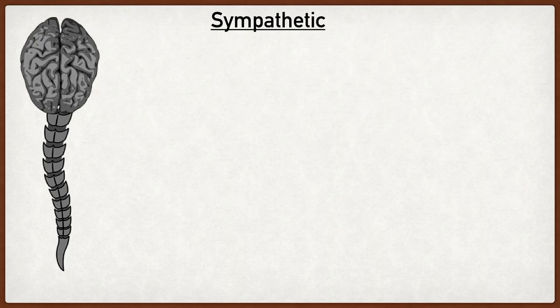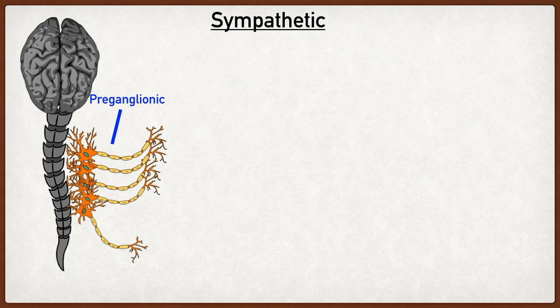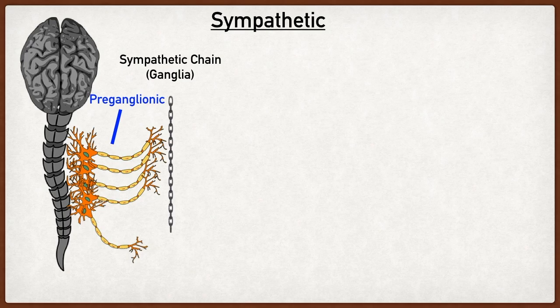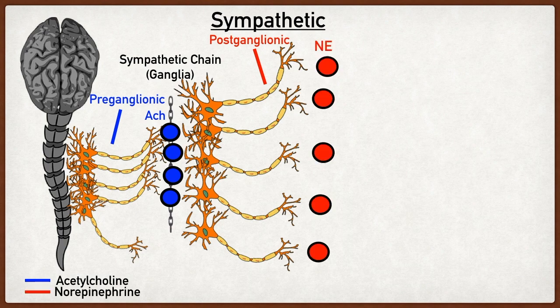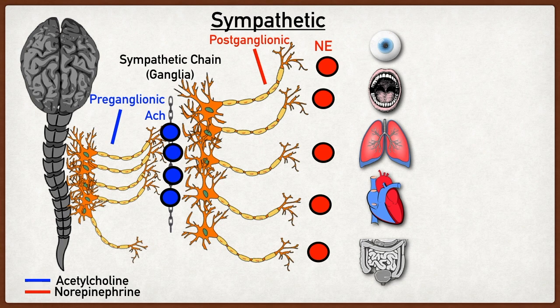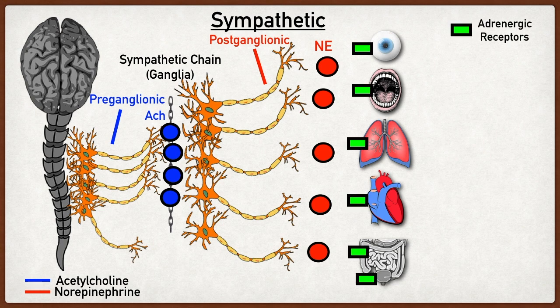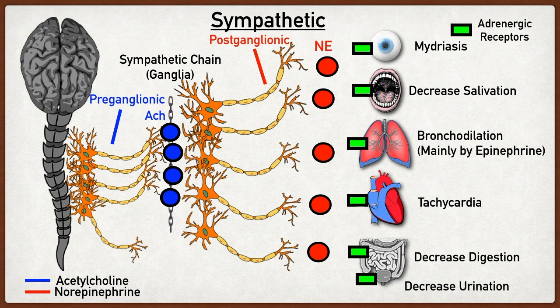Here's a closer look at the sympathetic nervous system and how it interacts with adrenergic receptors. The sympathetic nervous system arises from the central nervous system in the thoracolumbar region, specifically T1 through about L2. Preganglionic sympathetic neurons terminate close to the spinal cord at the sympathetic chain — a collection of neuronal cell bodies called ganglia. These preganglionic neurons release acetylcholine onto nicotinic cholinergic receptors on postganglionic sympathetic fibers, generating an action potential and causing release of norepinephrine. Postganglionic neurons terminate on target tissues and organs containing adrenergic receptors where norepinephrine can bind and produce the fight-or-flight response.